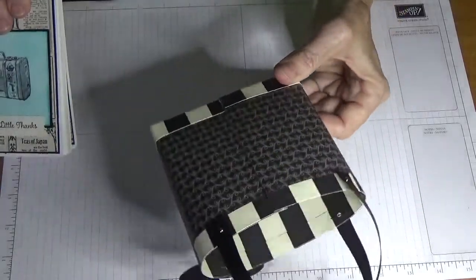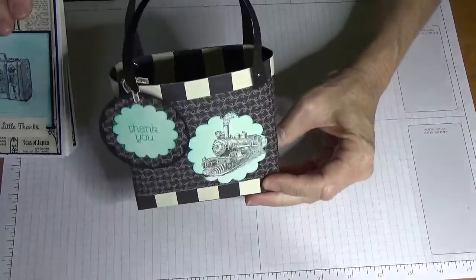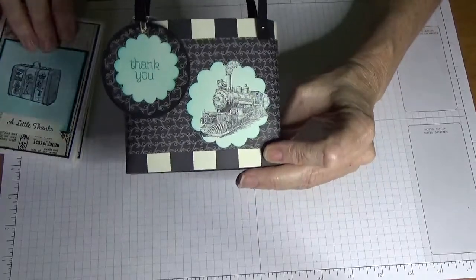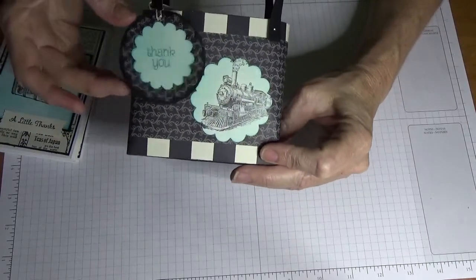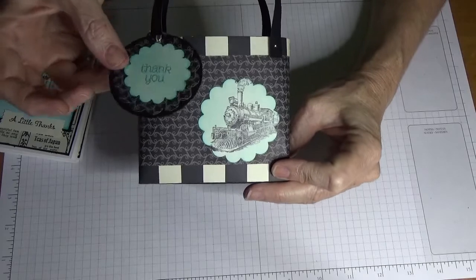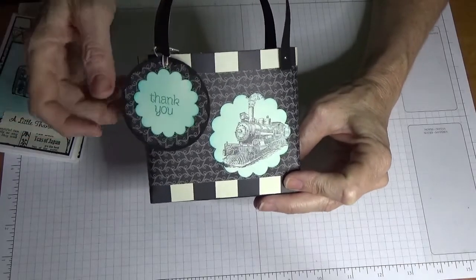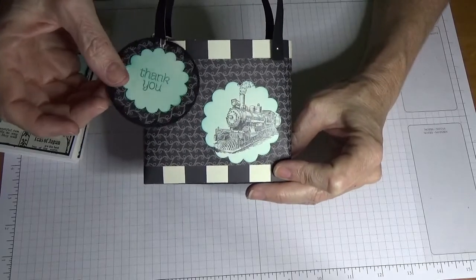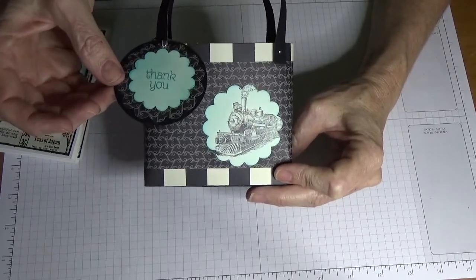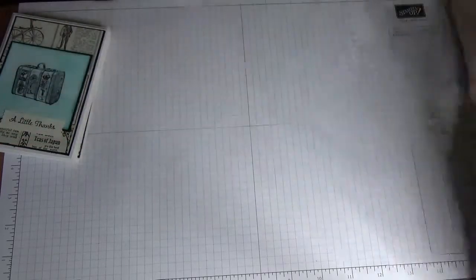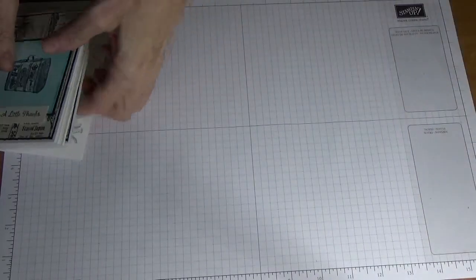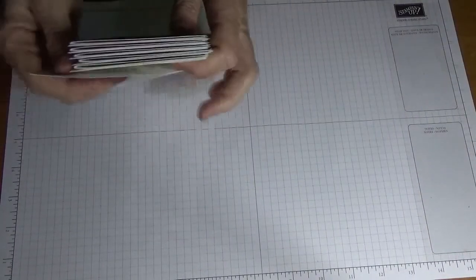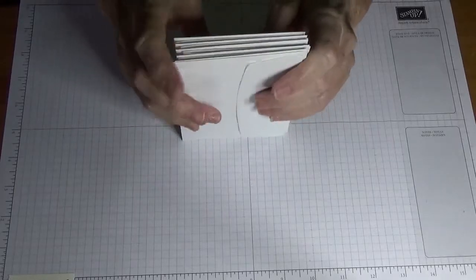I've stamped it with the train from the Traveler stamp set and just made a little tag, tied it on with some ribbon, just layered the tag with some Stampin' Up punches that I had. So that's the tote bag.